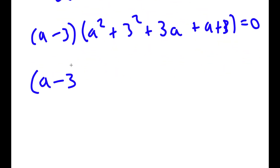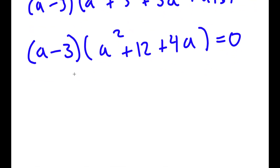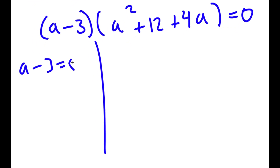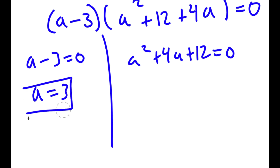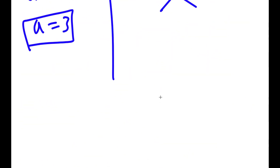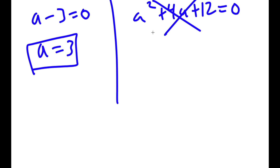This simplifies to (a minus 3) times (a² plus 4a plus 12) is equal to 0. This gives me two equations: a minus 3 equals 0, so a equals 3, which is one solution; and a² plus 4a plus 12 equals 0. Using the quadratic formula on the second equation gives the square root of a negative number, so there is no real solution there. Therefore, a equals 3 is our only solution.